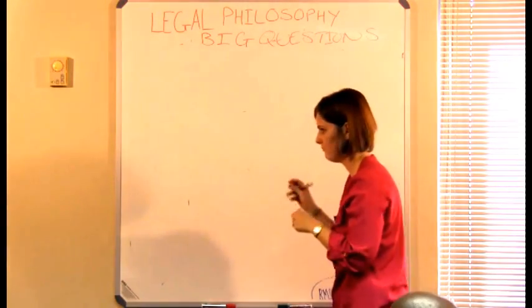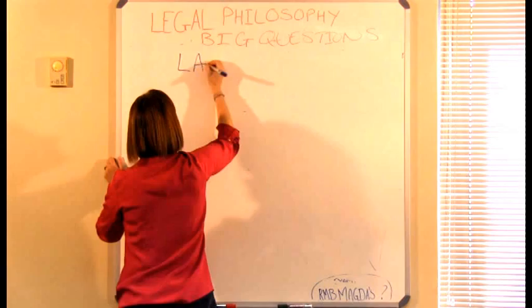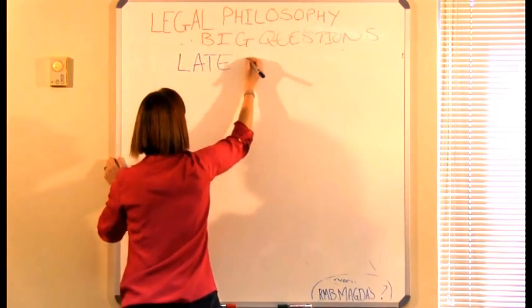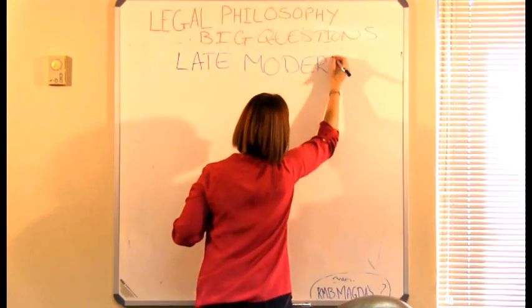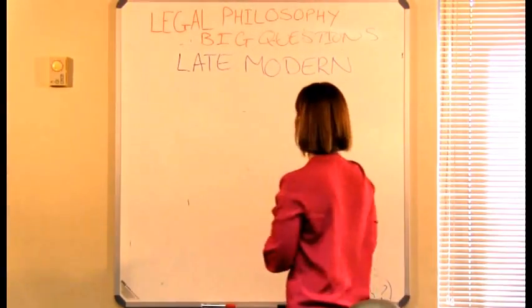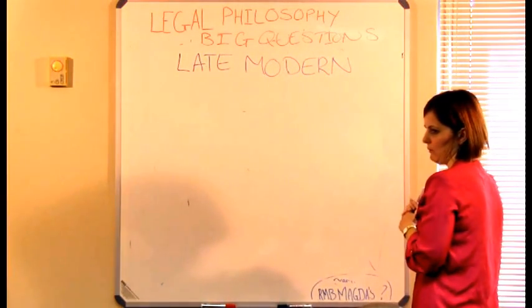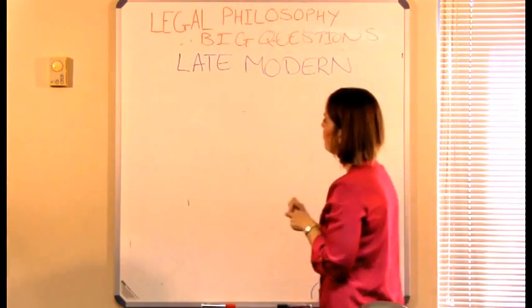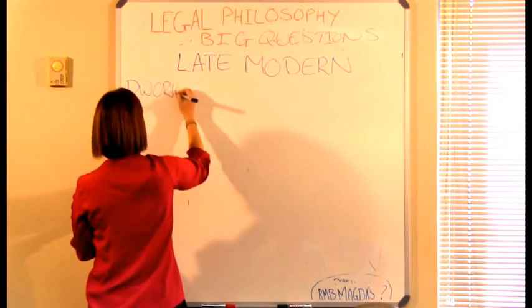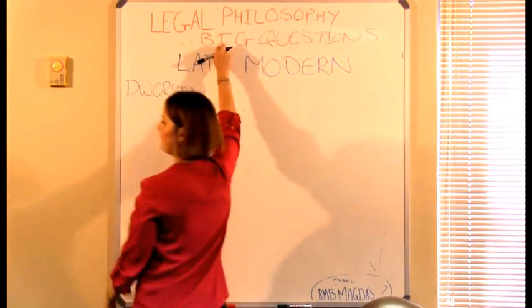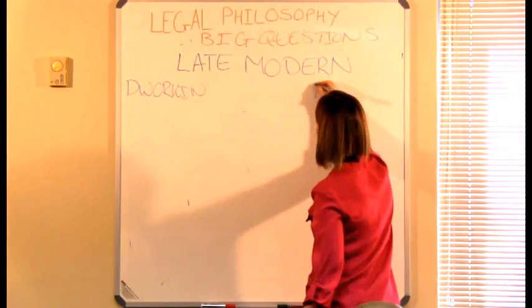What is the next era? The late modern. In the late modern era, we discussed two people: Dworkin, who is trying to answer the big question of how judges decide cases, and Rawls, who is trying to answer what is law and how do we structure society.